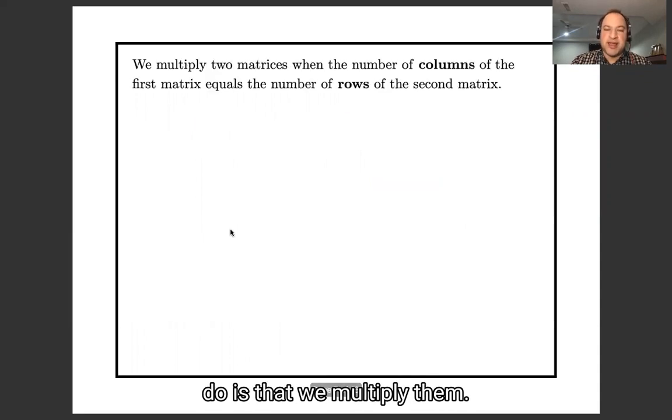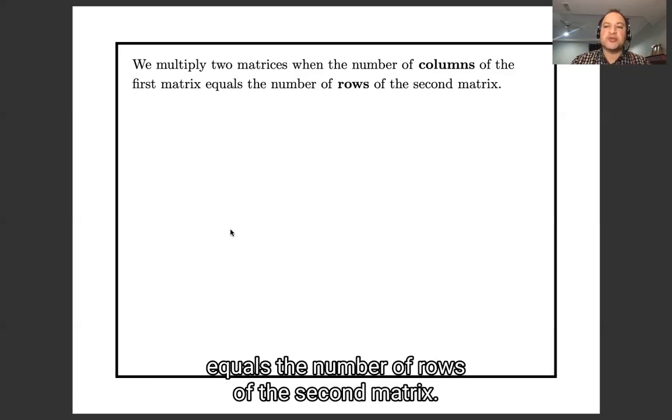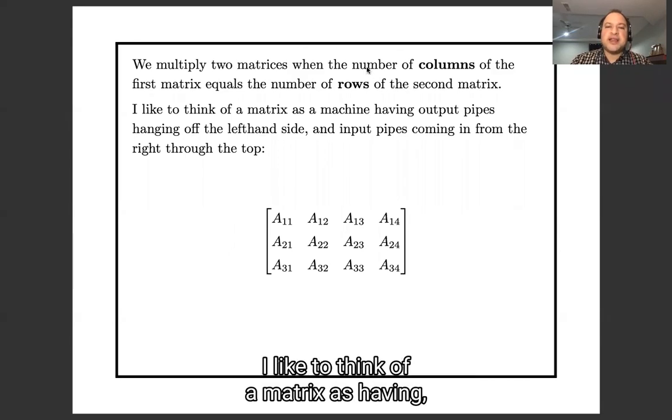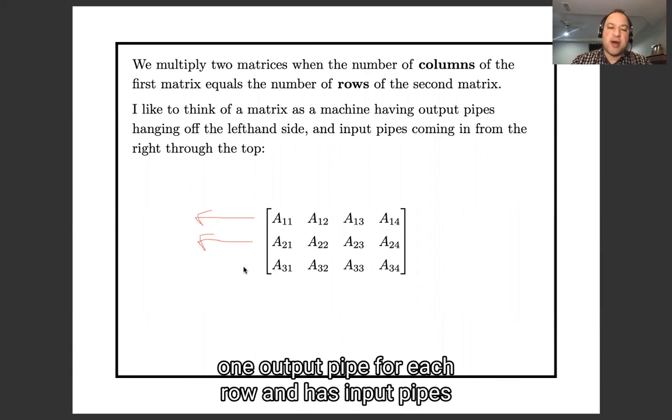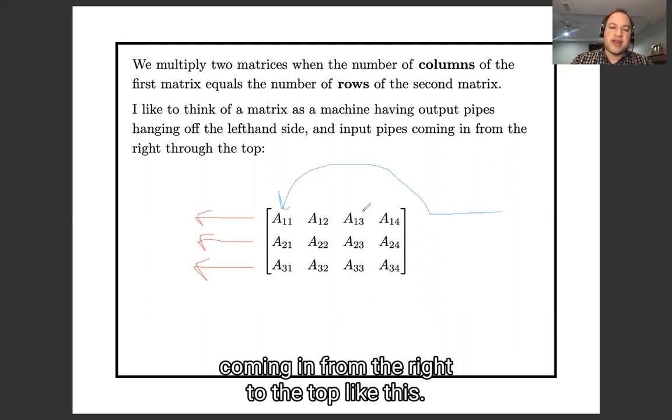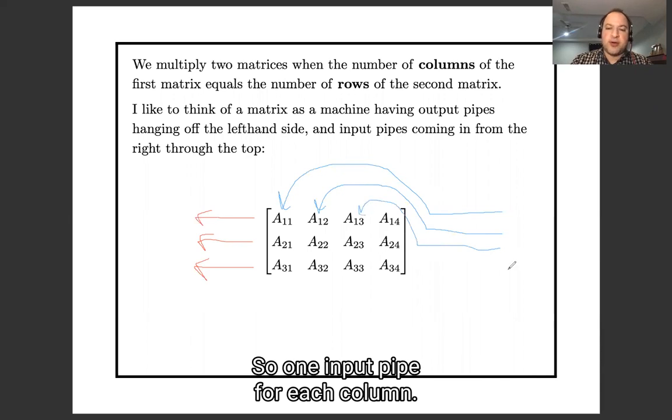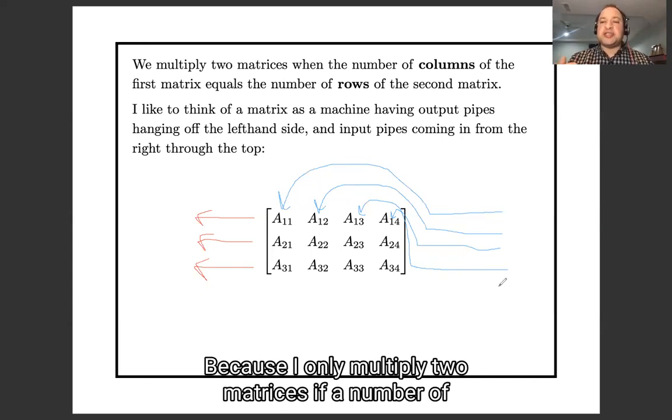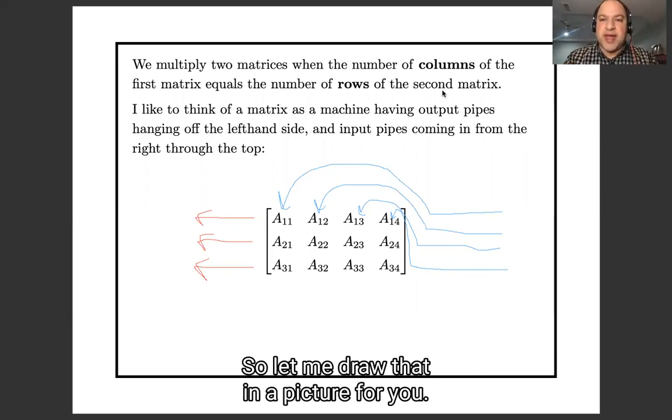The more interesting thing we do is that we multiply them. So we can only multiply matrices if the number of columns of the first matrix equals the number of rows of the second matrix. So here's a corny little picture I have in my head. I like to think of a matrix as having a little machine which has output pipes coming off the left hand side, one output pipe for each row, and has input pipes coming in from the right through the top like this. So one input pipe for each column. And why am I bringing this up now? Because I only multiply two matrices if the number of outputs coming from here matches the number of inputs that are waiting over here.